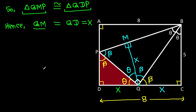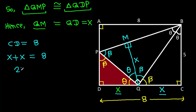Now, CD is 8, and CD equals X plus X, so 2X equals 8, therefore X equals 4.